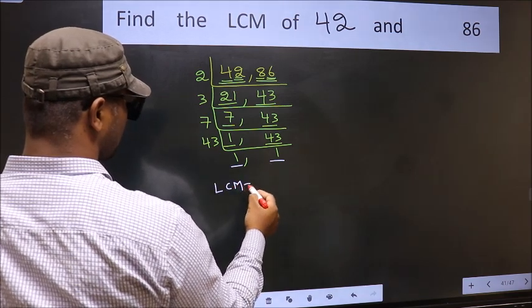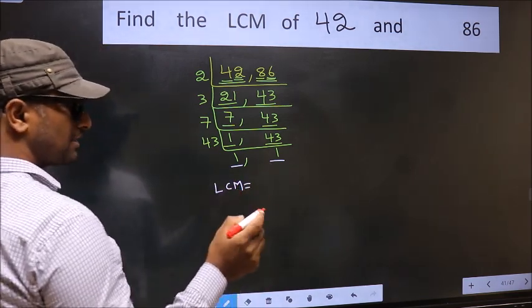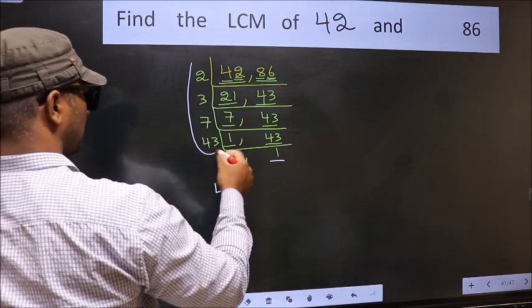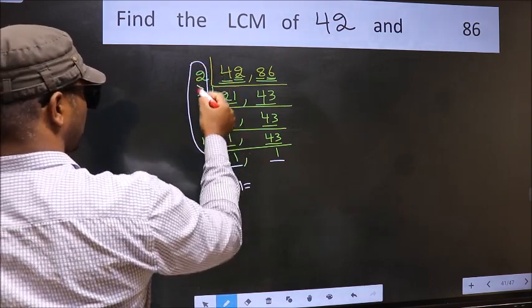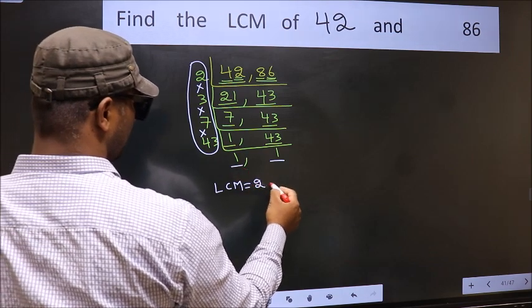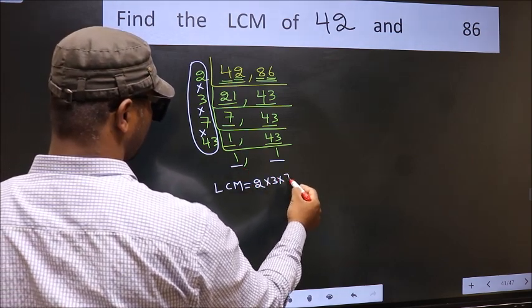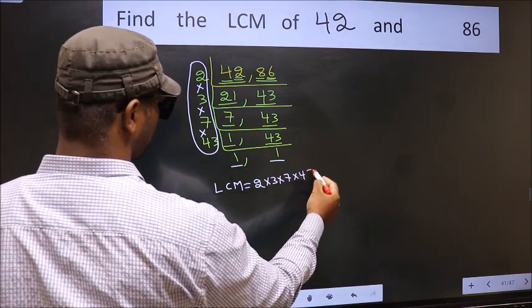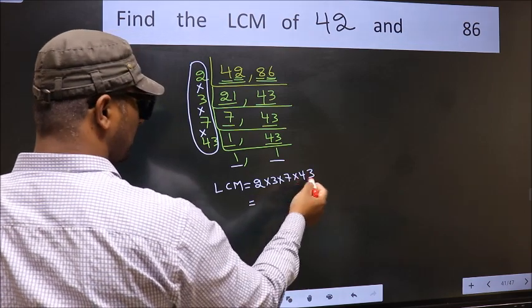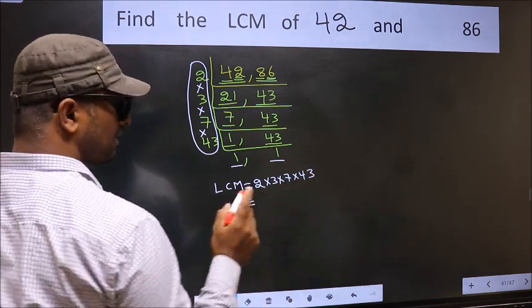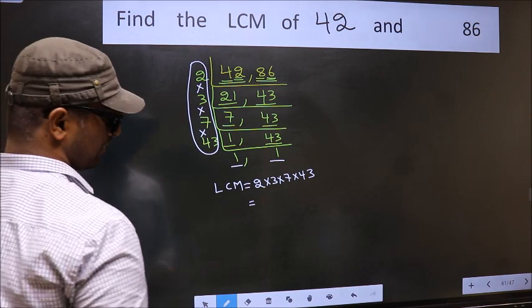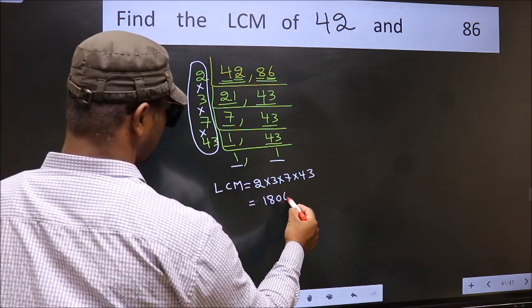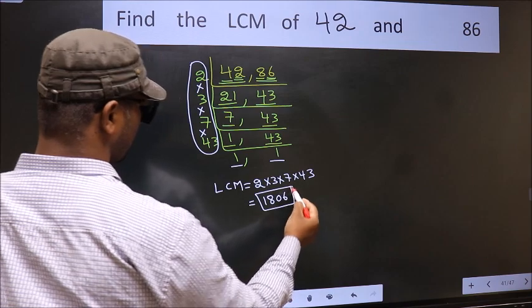So our LCM is, LCM is the product of these numbers, that is 2 into 3 into 7 into 43. When we multiply these numbers, we get 1806 is our LCM.